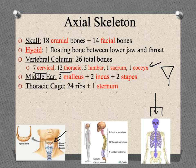Also within each ear you have three tiny bones: one malleus, one incus, and one stapes per ear — they are the tiniest bones in the body. Finally, we have the chest bones: 24 ribs and one sternum right down the center.